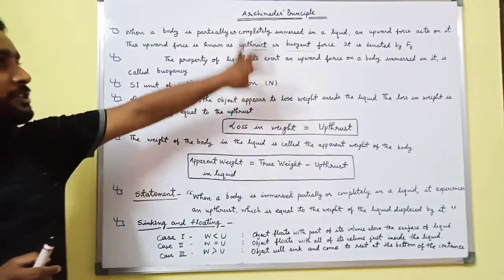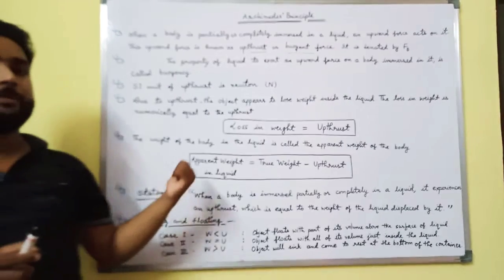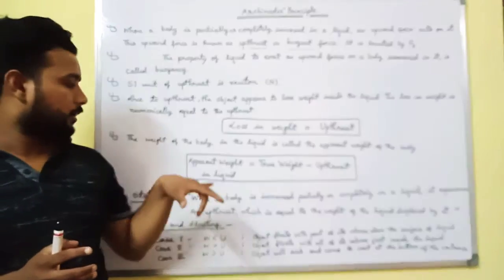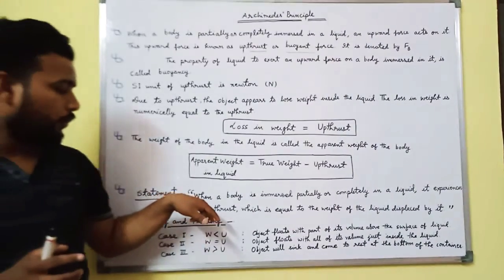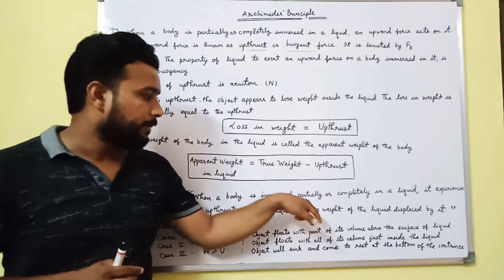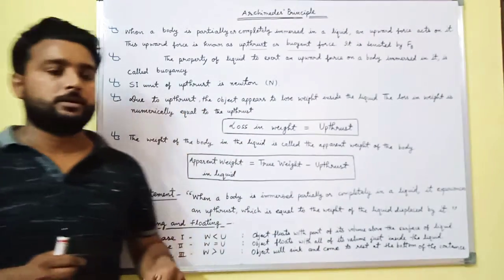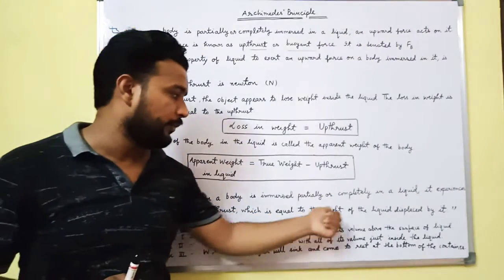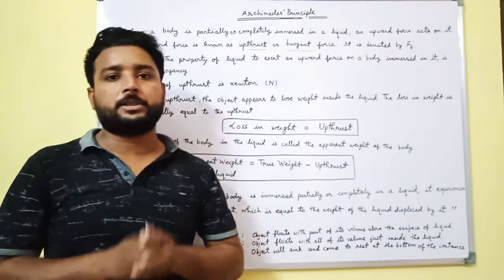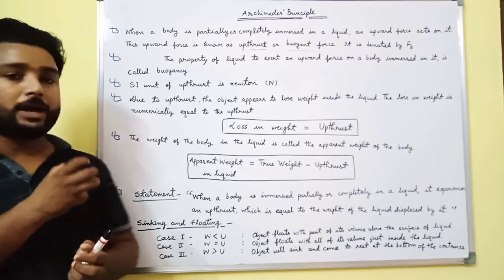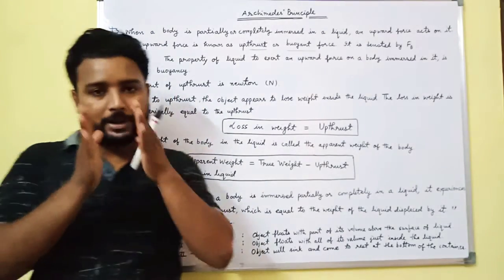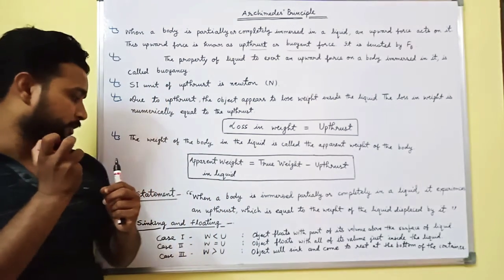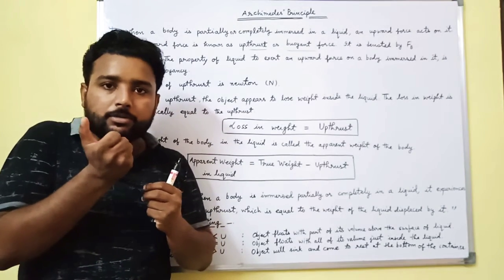A famous scientist and mathematician gave a statement: when a body is immersed partially or completely in a liquid, it experiences an upthrust which is equal to the weight of the liquid displaced. This is Archimedes' Principle — the body partially or completely immersed in liquid experiences an upthrust equal to the weight of liquid displaced.